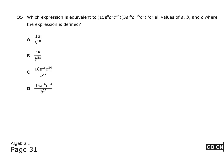Problem number 35 has to do with rules of exponents. It says: which expression is equivalent to 15a to the 0, b squared, c to the 34th power times 3a to the 16th, b to the negative 29, c to the 0, for all values of a, b, and c where the expression is defined? The first thing I'm going to do is multiply 15 times 3, which is 45. So the numerical part is 45, and I can eliminate answers A and C because those say 18.